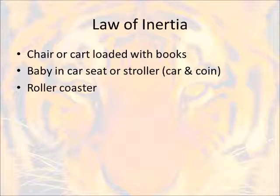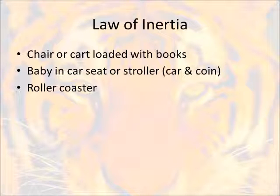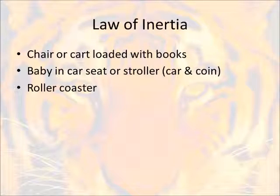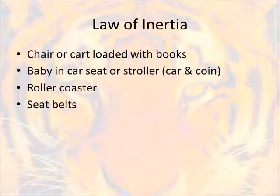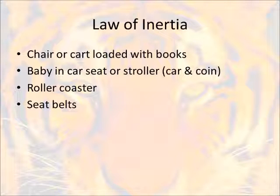Roller coasters are classic examples of inertia. Once the roller coaster starts going down the first big hill, it really wants to keep going in a straight line forever, but the track twists and turns as different forces apply to it. Seat belts in your car are also a great example. If you're riding in your car and something jumps out and they hit the brakes really hard, it feels like you fly forward. The car has stopped and your body has inertia — it wants to keep going through the windshield. Hopefully the seat belt grabs you and pulls you back.